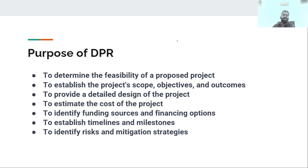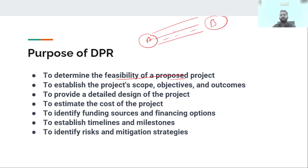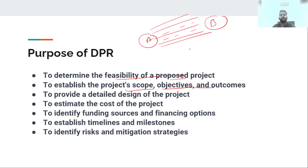What is the purpose of DPR? First, to determine the feasibility of a proposed project. For example, we will explain a highway project developing city A to city B — converting an existing four-lane highway to a six-lane highway. We have to check whether the project is feasible based on traffic flow. We also need to establish the project scope, objective, and outcome.